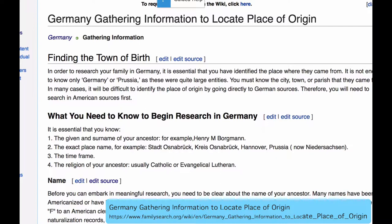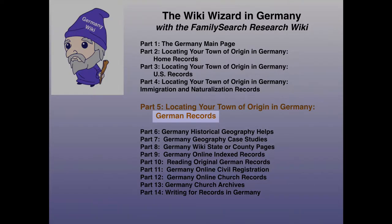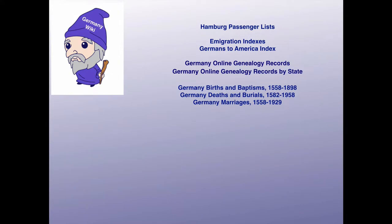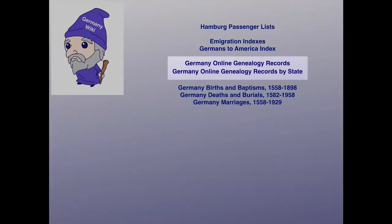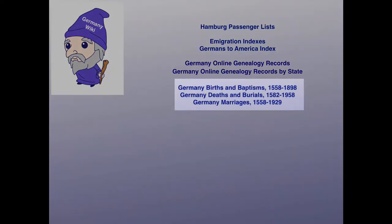This article, 'Germany Gathering Information to Locate Place of Origin,' gives a list of records that you can search and links to make it possible for you to reach those records. In this lesson, we'll be looking at German records. We'll be studying the Hamburg passenger lists. There are immigration indexes generated by the different states in Germany, and I will teach you how to use the online genealogy records pages. There are also some collections of births, marriages, and deaths taken from an eclectic group of sources.